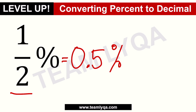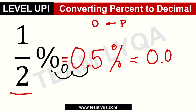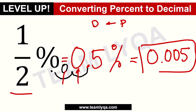From here, we do our movement — percent to decimal is to the left. So we move: one, two, plus one zero here. So this will be 0.005. Half a percent is 0.005.